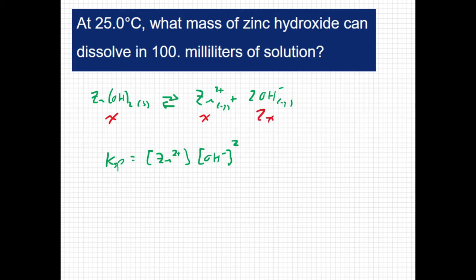I can plug those into my equilibrium expression. I can say Ksp, which we found to be 4.5 times 10 to the negative 17, equals the concentration of zinc, which we've called x, times the concentration of hydroxide, which we've called 2x squared.